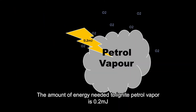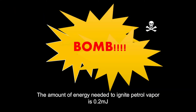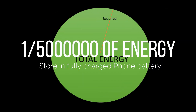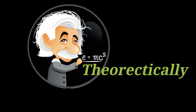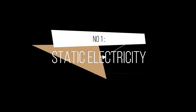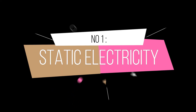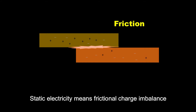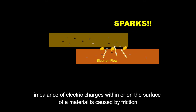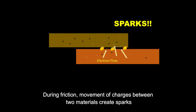The amount of energy needed to ignite petrol vapour is 0.2 millijoules. Static electricity means frictional charge imbalance — an imbalance of electric charges within or on the surface of a material caused by friction. During friction, movement of charges between two materials can create sparks.